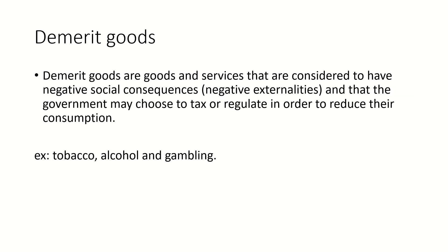Demerit goods are goods and services that are considered to have negative social consequences, also known as negative externalities, and the government may choose to tax or regulate them in order to reduce their consumption. For example, tobacco, alcohol and gambling.